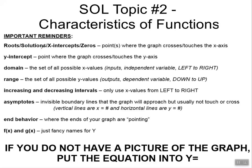Roots, solutions, x-intercepts, zeros — these are four words that mean the same thing. We're talking about the point or points where the graph crosses or touches the x-axis. We would like for these to be written as ordered pairs, so that will be a number, comma, zero for the x-intercepts.